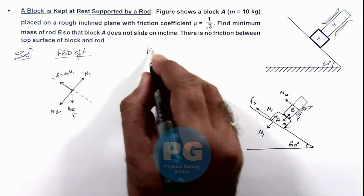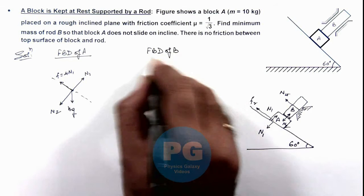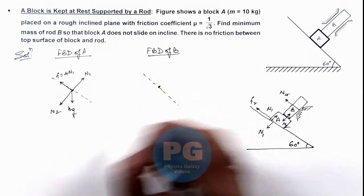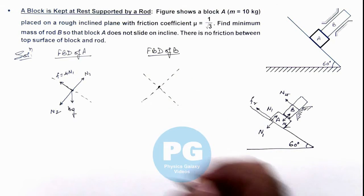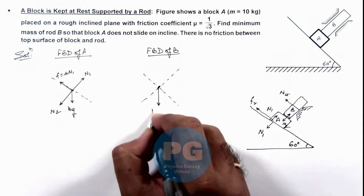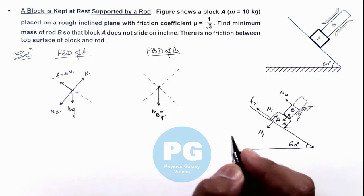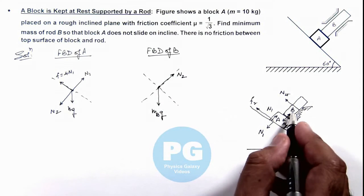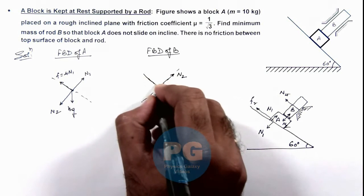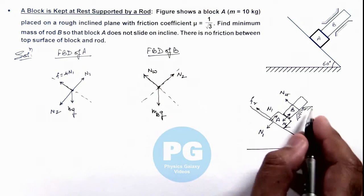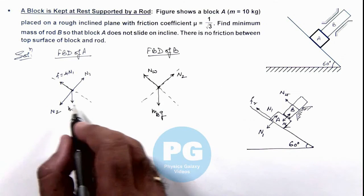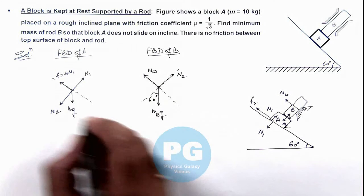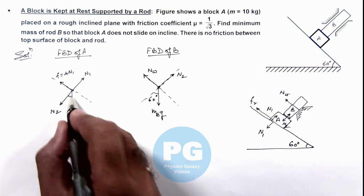Drawing the free body diagram of rod B: taking the reference line along and normal to the incline, rod B experiences its weight MbG in the downward direction. A normal reaction N2 acts on it normal to the incline due to block A. It is also supported by a normal reaction Nw from the wall support. The angle here is 60 degrees, and in this situation also this angle is 60 degrees.